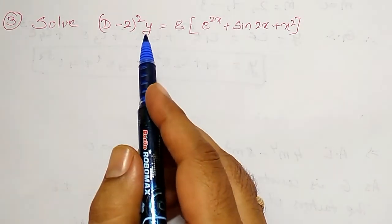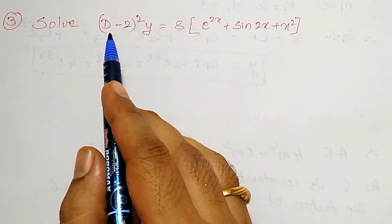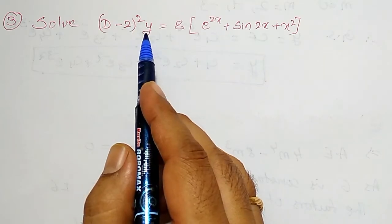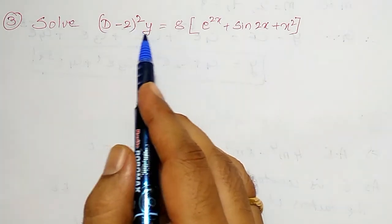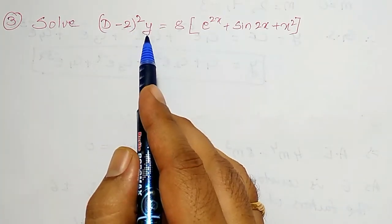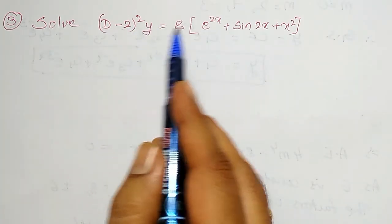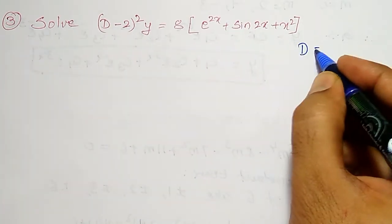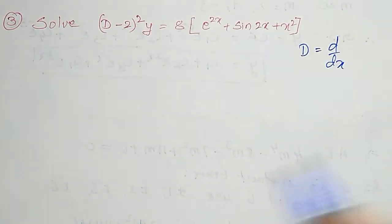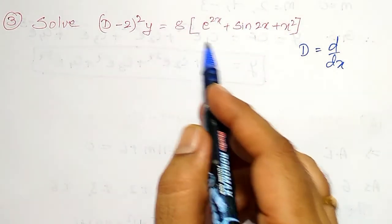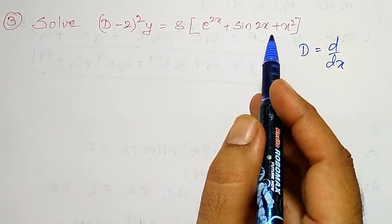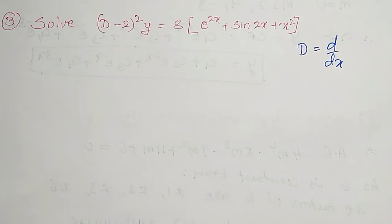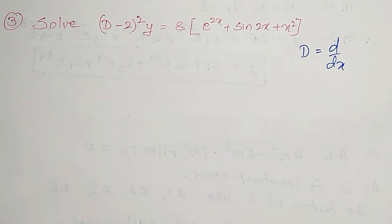You can observe here, it is (D minus 2) the whole square into y, where y is the dependent variable on x, and D is the differential operator d/dx. The right hand side is a function of x, therefore the solution contains two parts: one is CF and another one is PI.